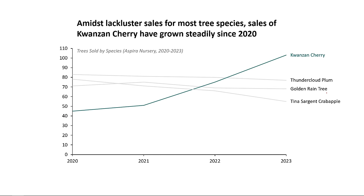Amidst lackluster sales for most tree species, sales of Kwanzan Cherry — this green line right here — have grown steadily since 2020. This might not seem like much, but the difference between these two charts is really important.